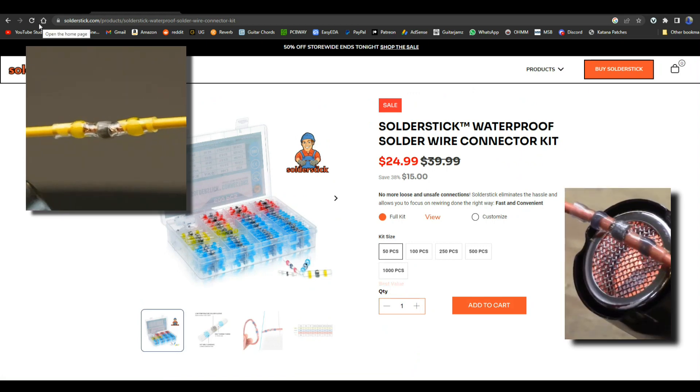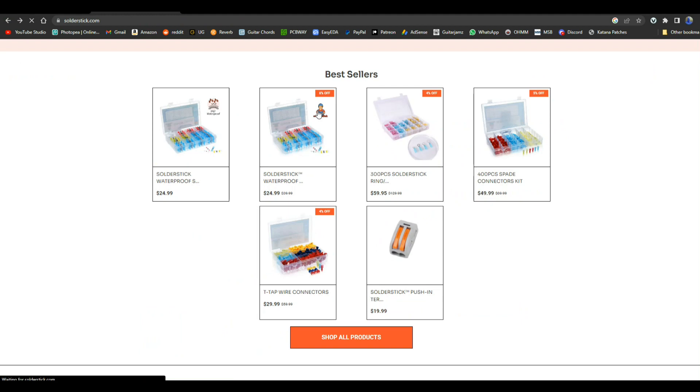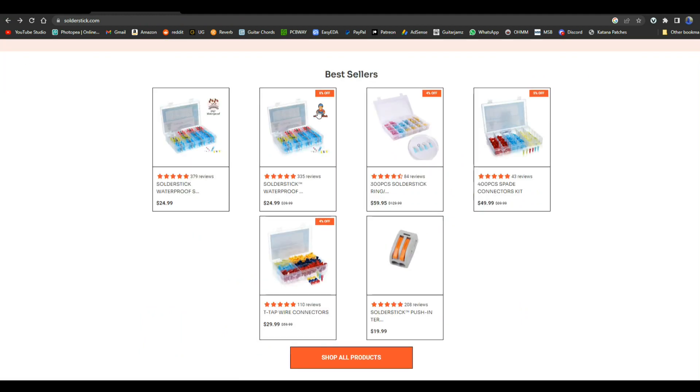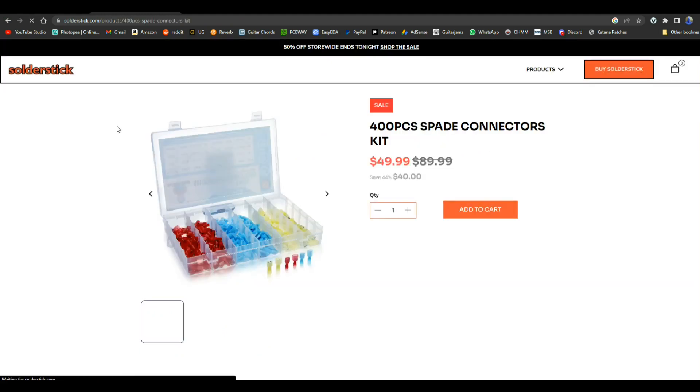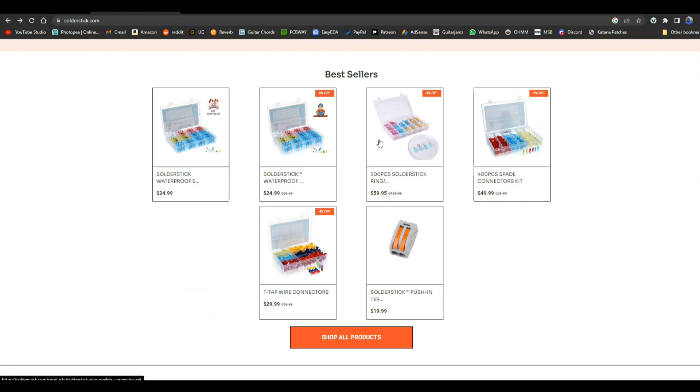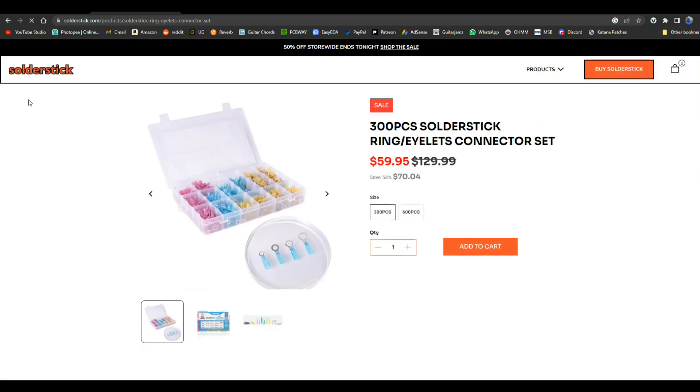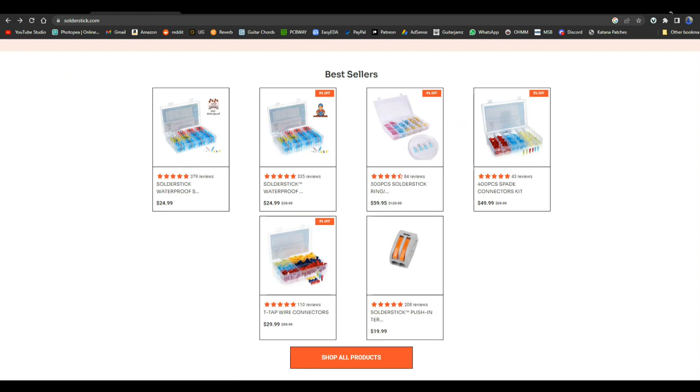Waterproof melt butt connector kits, spade connector kits which if you work on cars or boats you know how useful they will be, and the same goes for ring connectors when you need to connect a wire to something with a nut and a bolt. This is simply the way to do it. Solder Stick, remember them for all of your wire connection needs. There's a link down below for a discount.